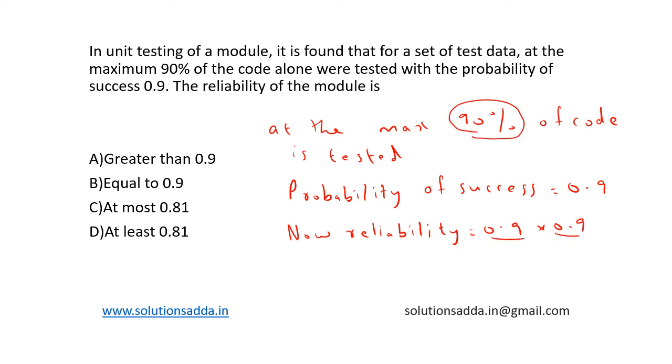So it is 0.81. Now the answer is at most 0.81, option C, because we are given that maximum 90 percentage of the code was tested. So maximum means at most 0.81 would be the answer. Hence, option C is the correct answer.